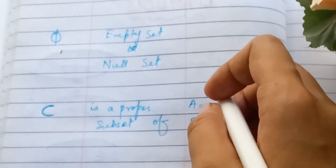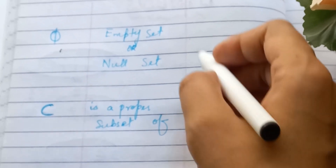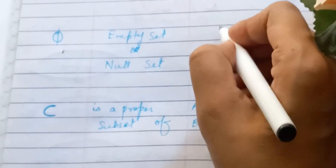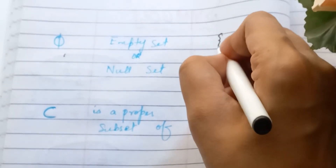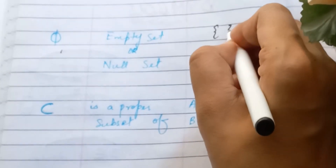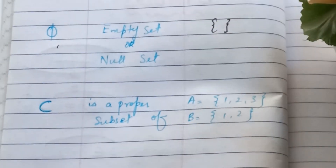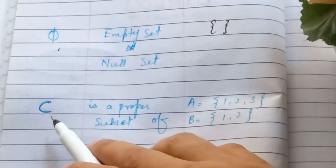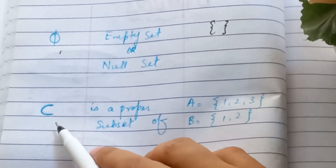The next symbol is the empty set or null set (∅). It represents any set which is null, empty, or has zero elements, so we put this symbol.